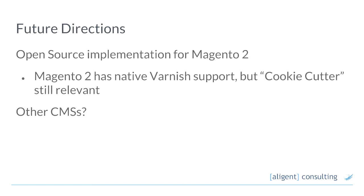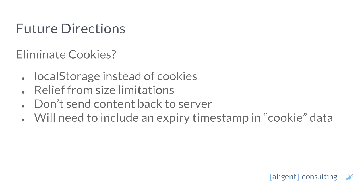I also think the same problem applies to a lot of other CMS sites trying to do full page caching — they'll have similar problems. The key takeaway I want you to leave with today is really the idea of what we've done and how we've gone about it. We've been doing cookie cutter for a while. Local storage is a thing now — we can store data in the browser and not have it sent back to the server on every request. This gives us some relief from size limitations, though we'll need our own expiry mechanism to dispose of the personalisation data. That's something we've considered but haven't implemented yet.